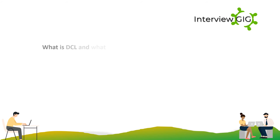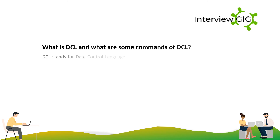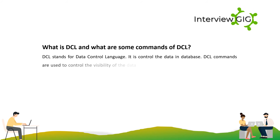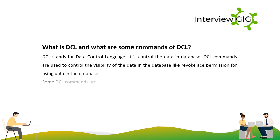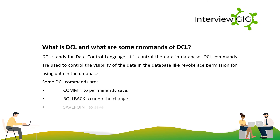DCL stands for Data Control Language. It controls the data and database. DCL commands are used to control the visibility of the data and the database, like revoking or granting permission for using data. Some DCL commands are: Commit — to permanently save; Rollback — to undo the change; Savepoint — to save temporarily.